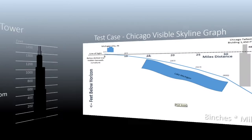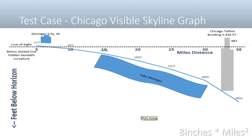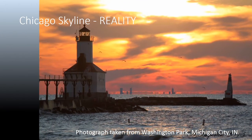I graphed out the miles and how much skyline is lost over the curvature of the Earth using Lake Michigan — you can see that chart here. When we look at the Chicago skyline from Washington Park in Michigan City, here's a picture someone else took. This is similar to what I saw when I arrived at daylight early on June 2nd. You can see the skyline quite well with your eyes.